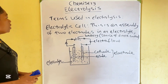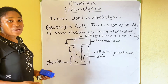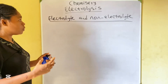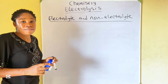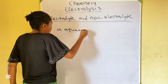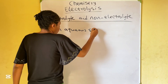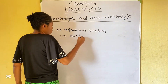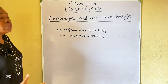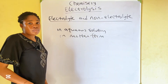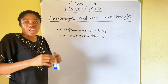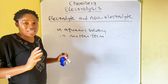Let's look at the difference between electrolytes and non-electrolytes. An electrolyte is a compound that conducts electricity and is decomposed in the process. For any substance to behave like an electrolyte, it must be in aqueous solution or in molten form. Non-electrolytes do not conduct electricity, whether in molten form or in aqueous solution — they do not conduct electricity at all.